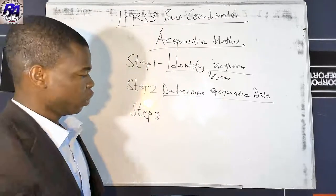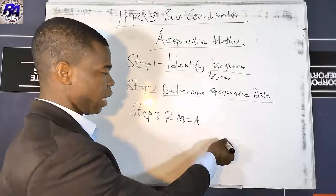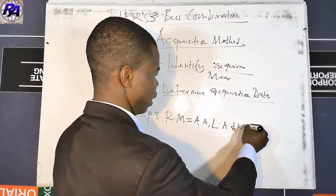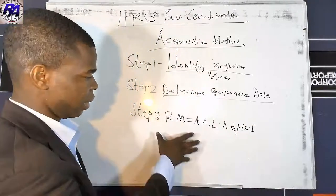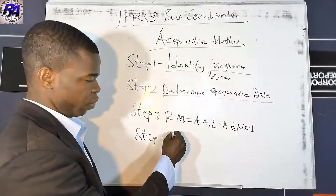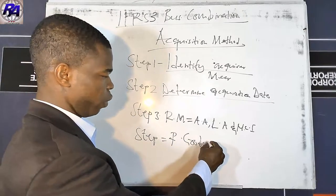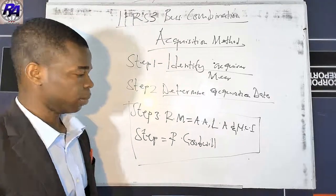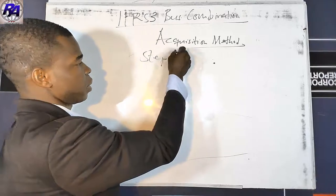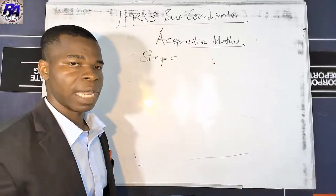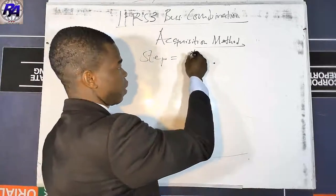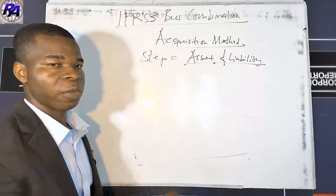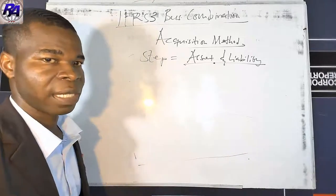Step three is to recognize and measure the assets acquired, liabilities assumed, and non-controlling interest. In measuring assets and liabilities, we must determine their fair value at the date of acquisition. The acquiree may not have recognized certain assets such as intangible assets, but the acquirer may recognize them at the date of acquisition.